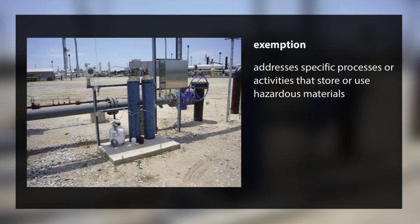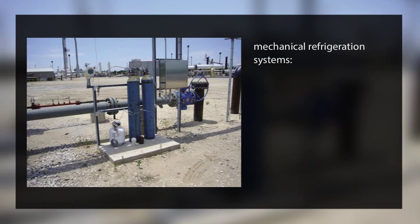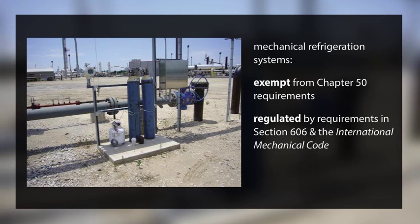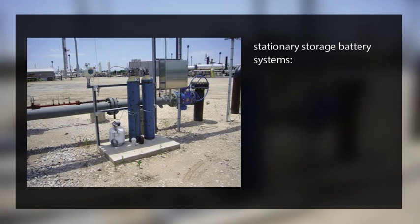Some exemptions concern activities regulated by other ICC code provisions, and other exempt activities are regulated and preempted by federal law. For example, mechanical refrigeration systems, which can use refrigerants that are flammable or corrosive such as anhydrous ammonia, are exempt from the chapter 50 requirements but are regulated by the requirements in section 606 and the International Mechanical Code. Stationary storage battery systems using corrosive materials suspended in an aqueous gel are regulated by the requirements in section 608. These specific provisions offer greater safety when compared to the general and materials-specific requirements in chapters 50 through 67.